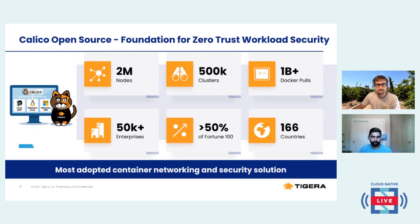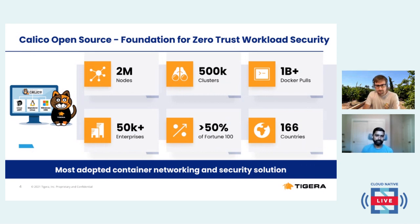The core design principles of Calico leverage best practices of cloud-native design patterns, combined with standards-based network protocols which are trusted by the largest internet carriers. What you get is exceptional scalability, running at scale in some of the largest Kubernetes deployments and enterprises.